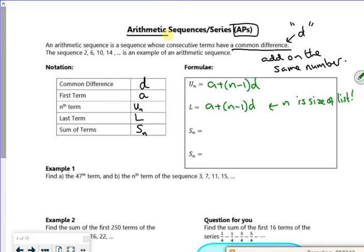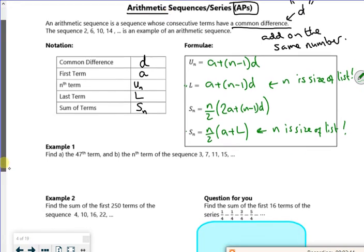Then I've got sum of. So sum of SN is N over 2, 2A plus N minus 1D. And I think N over 2, first plus last. This is the one where N is the size of the list as well. So these two, the second one and the fourth one would use together. The first and the third one would use together.